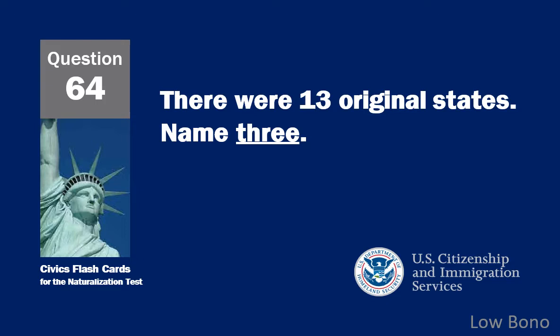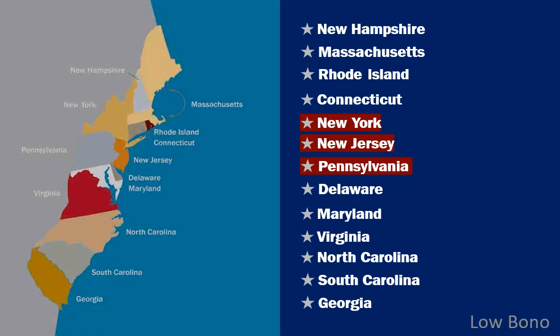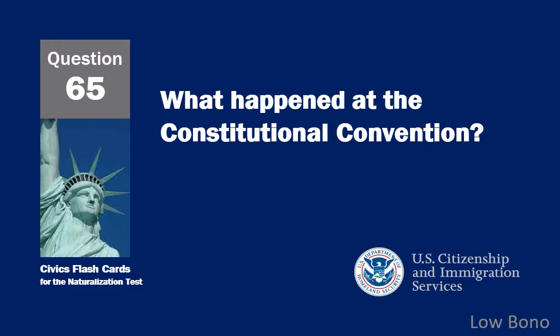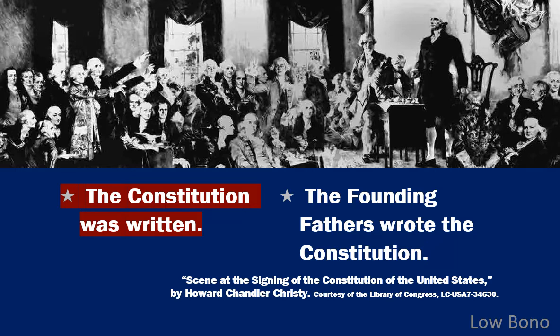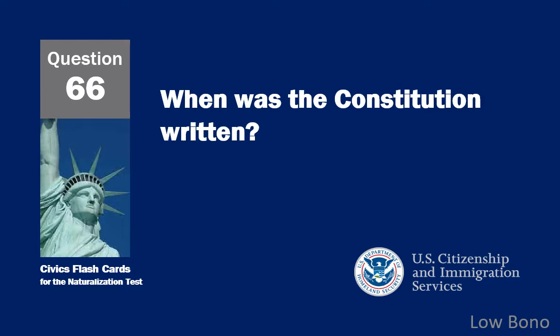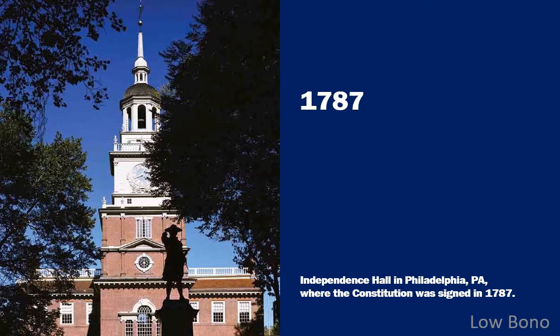There were 13 original states. Name three. New York, New Jersey, Pennsylvania. What happened at the Constitutional Convention? The Constitution was written. When was the Constitution written? 1787.